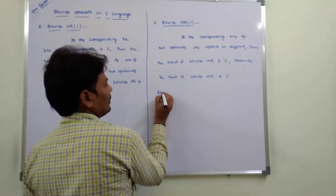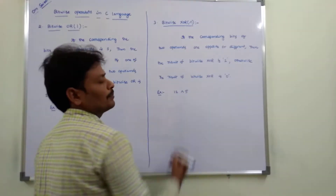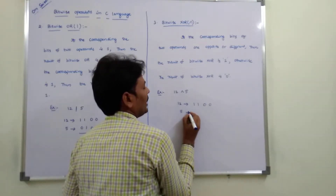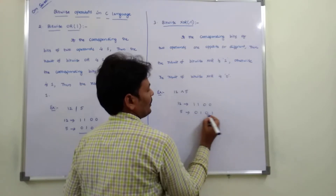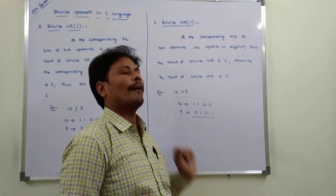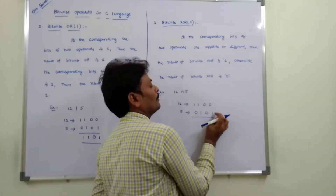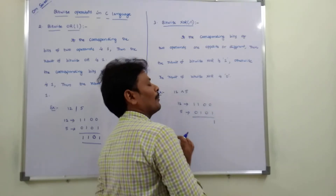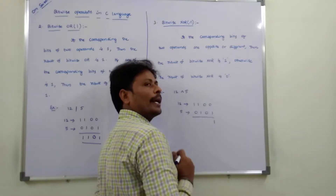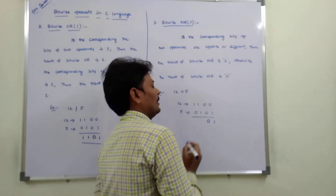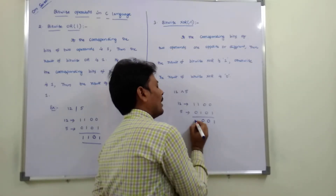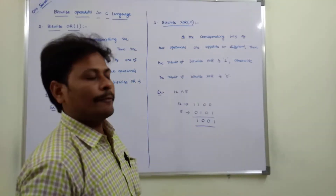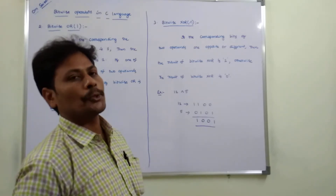Now consider the example 12 XOR 5. So 12 can be written as 1 1 0 0, and 5 can be written as 0 1 0 1. If the corresponding bits of two operands are opposite — here 0 and 1, both are opposite — so the result of the bitwise XOR operation is 1. If the corresponding bits of two operands are both 0, the result is 0. This is the result of the bitwise XOR operation performed on both operands 12 and 5.